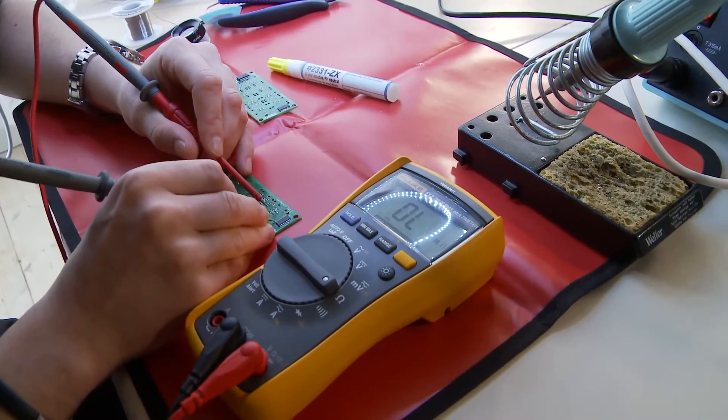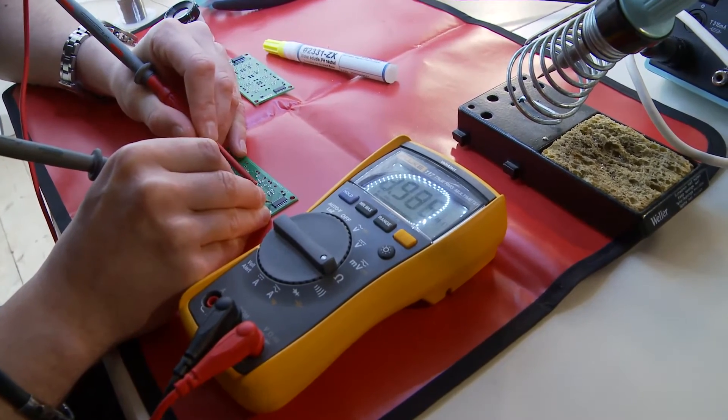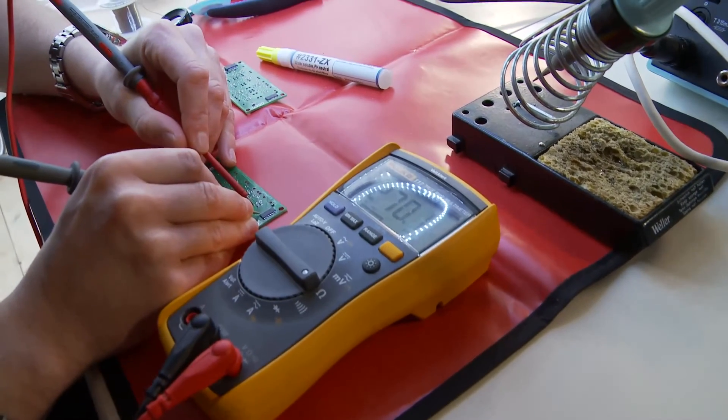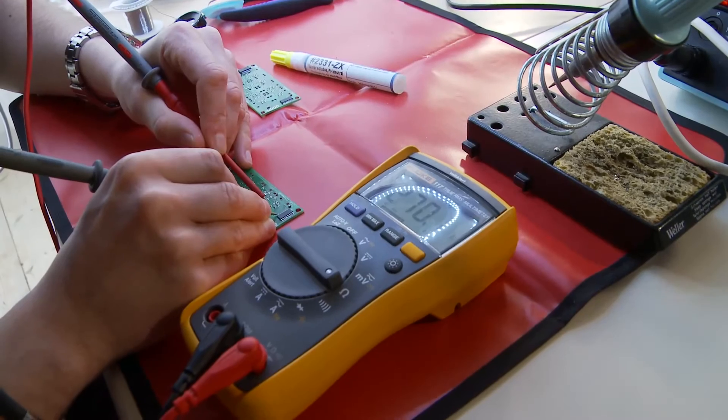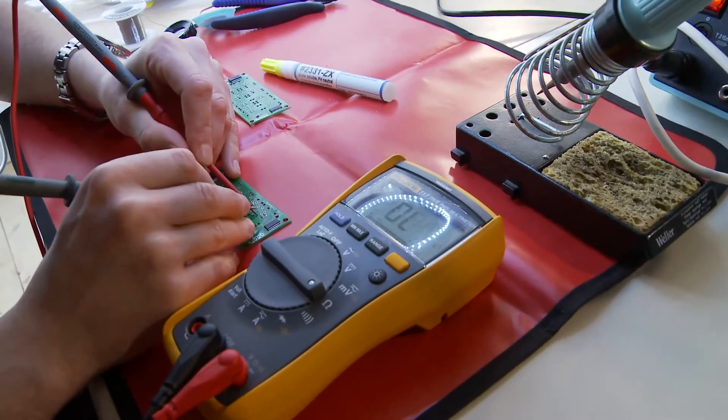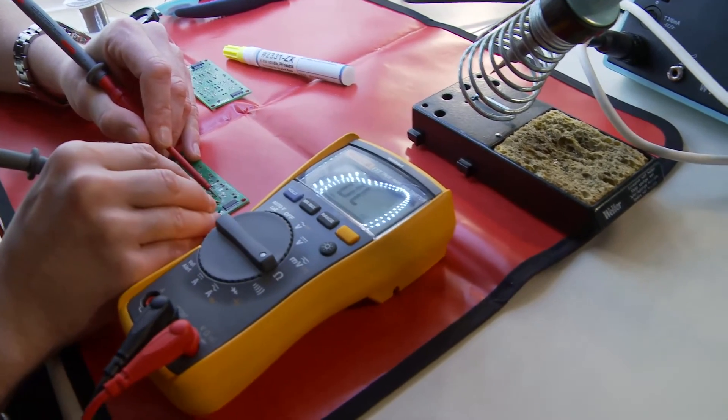The reading of the meter should be zero when you do not have a connection and it should be 270 or about 270 ohms when you measure a resistor. And this is exactly the value of the resistors that we have soldered for the buttons.